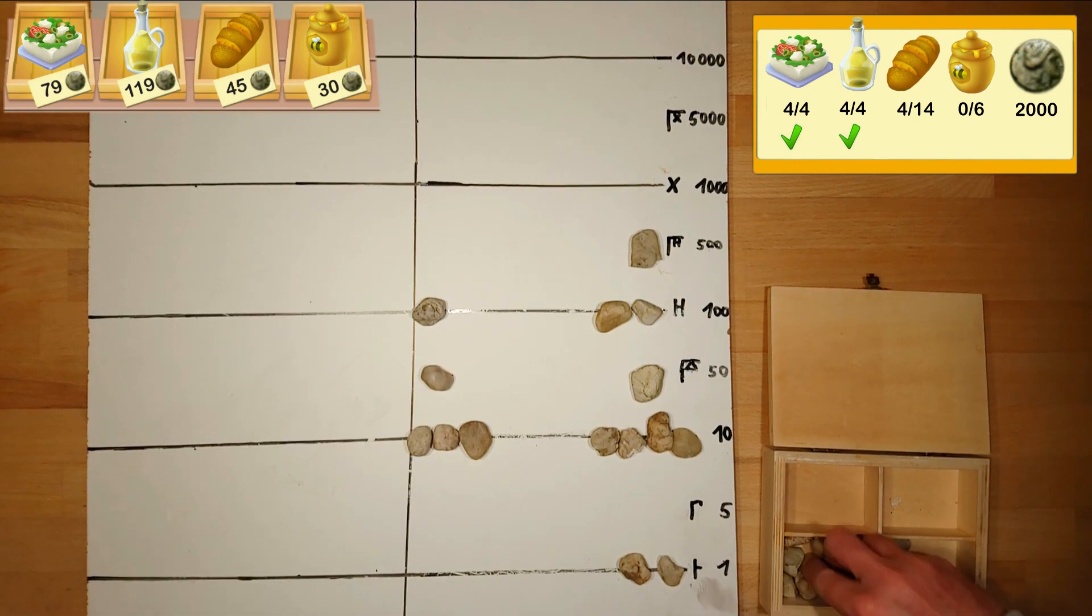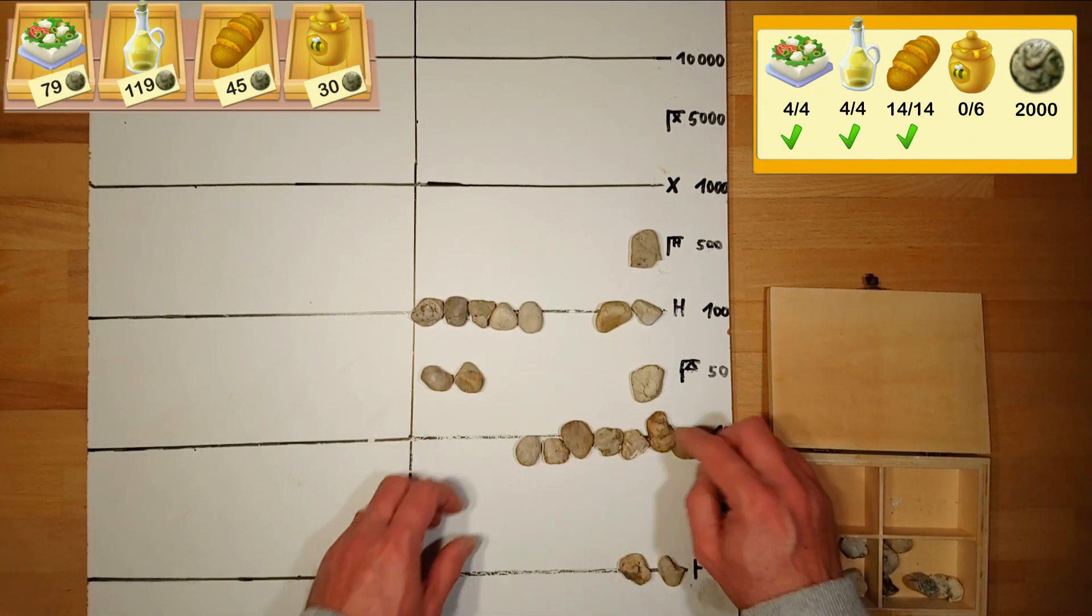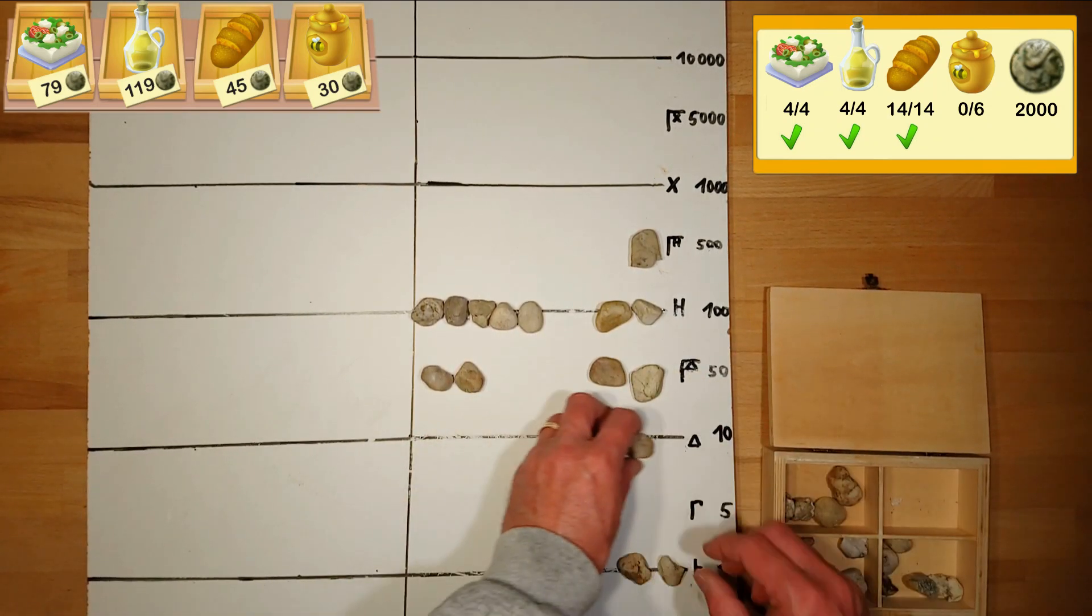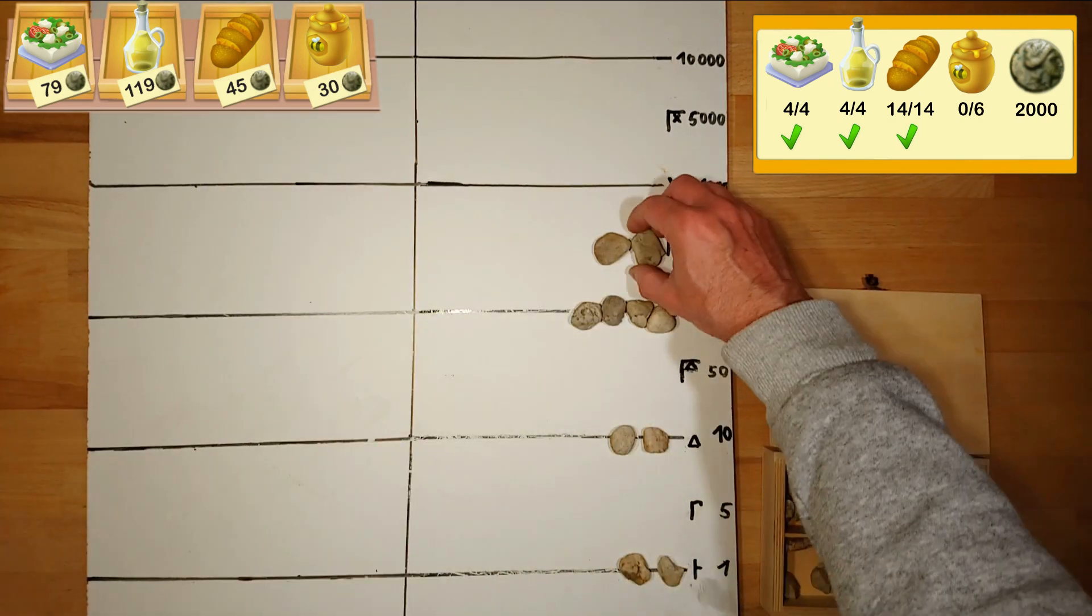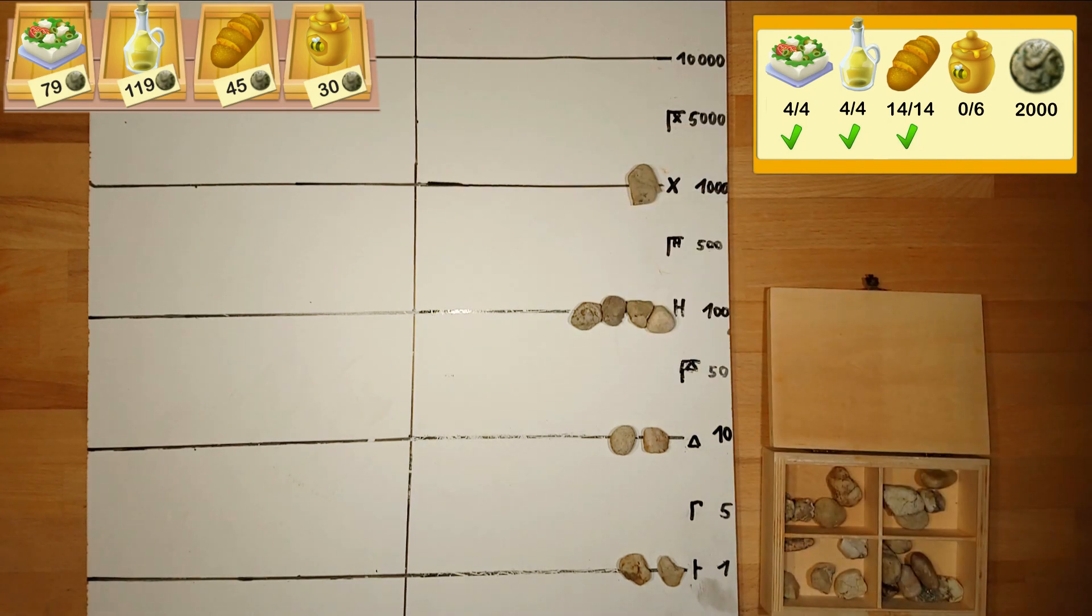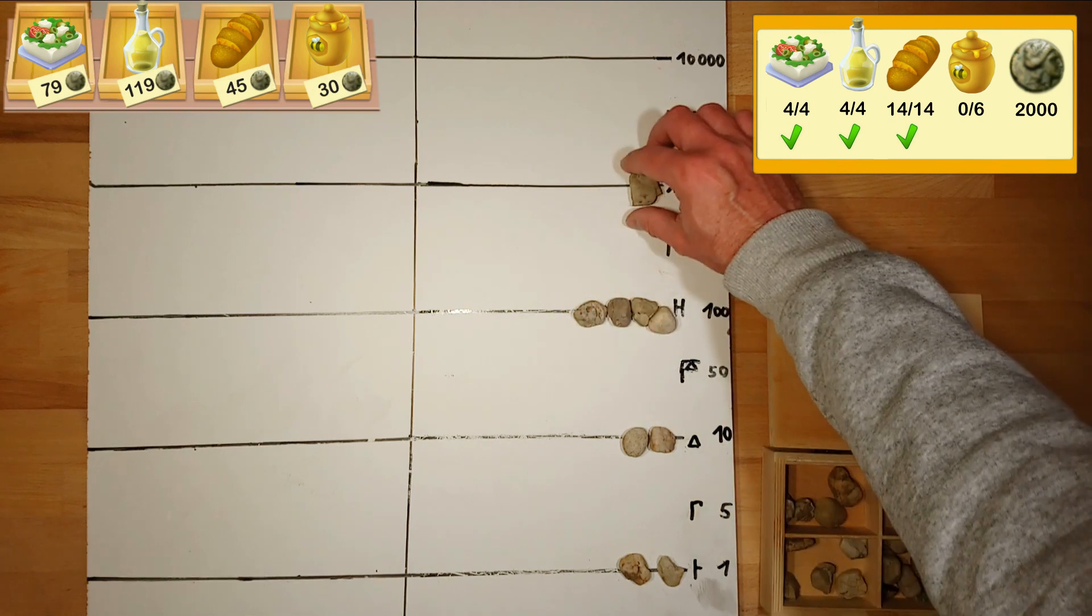Now we add the price for the remaining ten breads which is 450 coins. Now we have to sum up the pebbles for the bread with the pebbles for the other goods. The overall price for feta cheese, olive oil and bread is 1422.